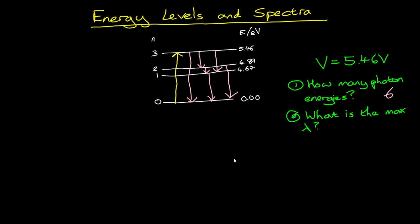How can we answer the second part of the question? Well, since E equals hc over lambda, where lambda is the wavelength, and we're looking for the maximum wavelength, it follows that we should be looking for the smallest possible energy transition. Now, looking at our diagram, which is not to scale, but we can see that the smallest possible transition of the 6 that we've drawn in our diagram is from 4.89 to 4.67.